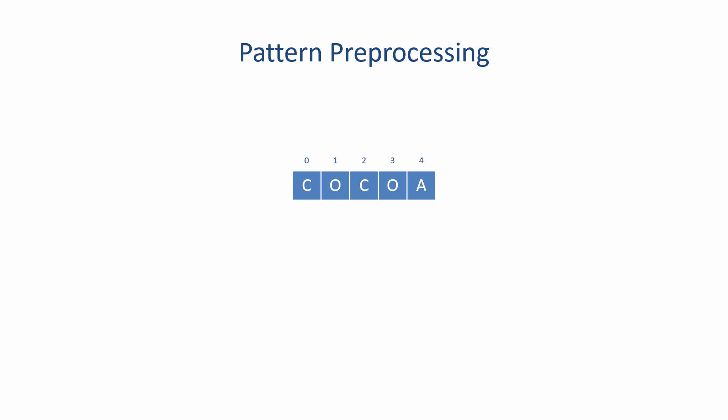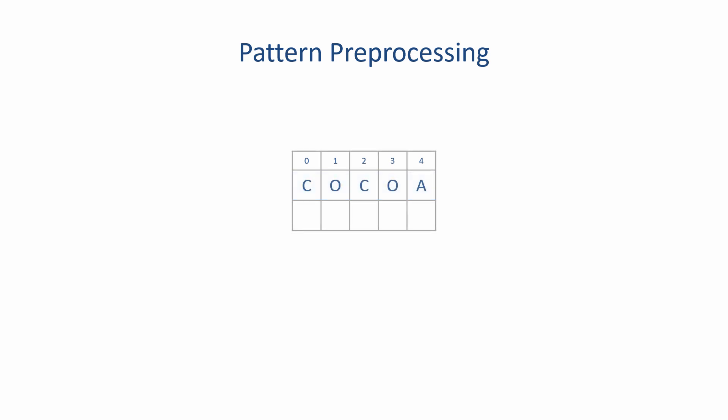Therefore, we are going to examine every possible partial match of this word and record how the search should respond if that particular partial match was to occur. The information generated will be stored in a so-called partial match table. This table goes by various names — sometimes it's called the fail table, sometimes the LPS table. Knuth, Morris and Pratt referred to it as the next table. I'm going to call it the partial match table for now. What really matters, of course, is what goes into the table. For every possible partial match, we're going to establish which index position of the pattern we need to reset the pattern pointer to. This is sometimes referred to as the fail value.